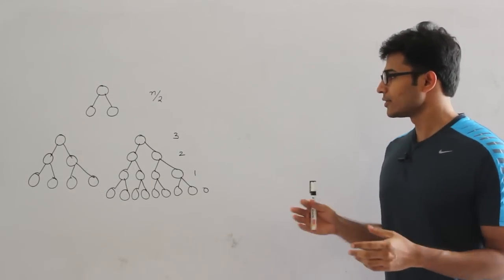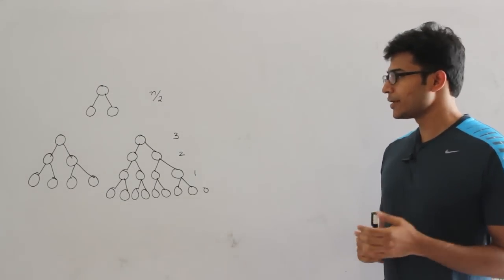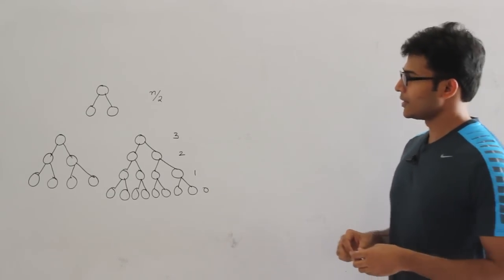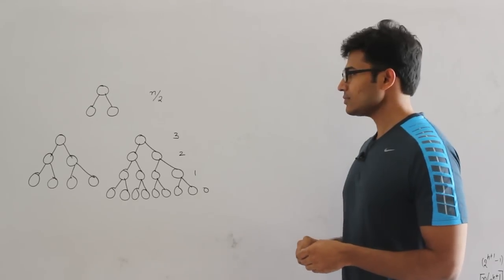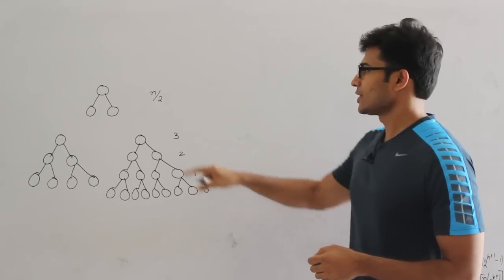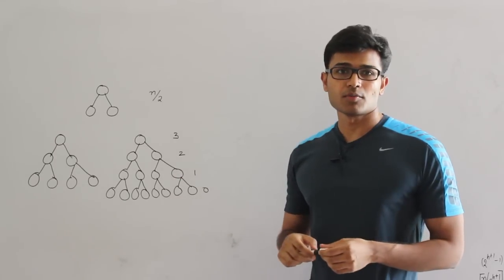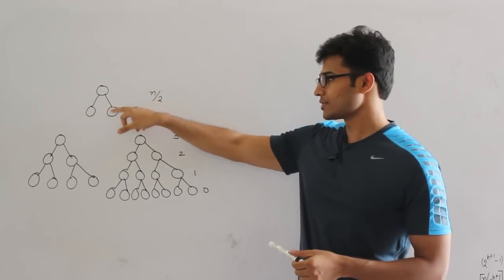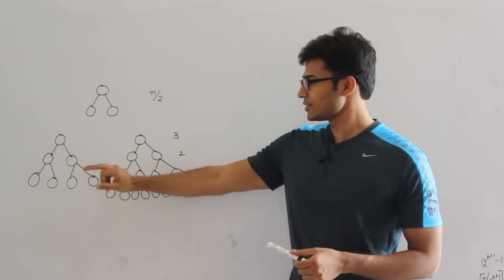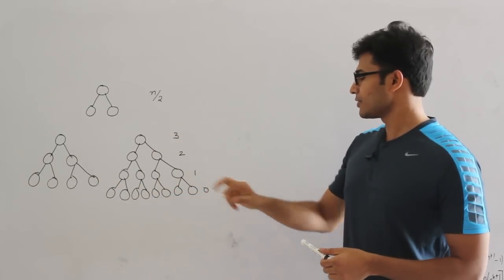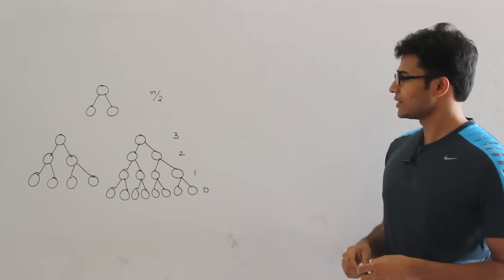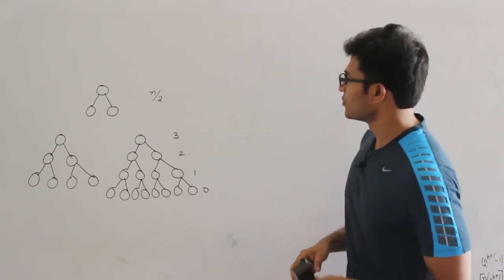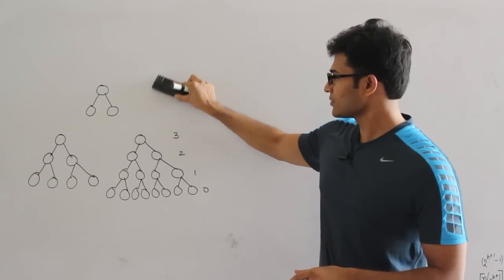Before going to the algorithms, I would like you to know about some properties of complete binary trees. This is a complete binary tree having three nodes, this is a complete binary tree having seven nodes, and this is a complete binary tree having fifteen nodes.